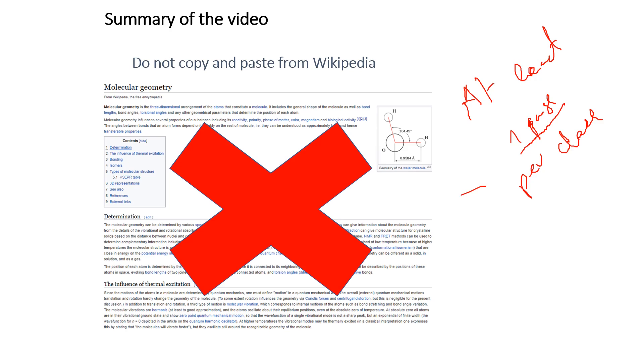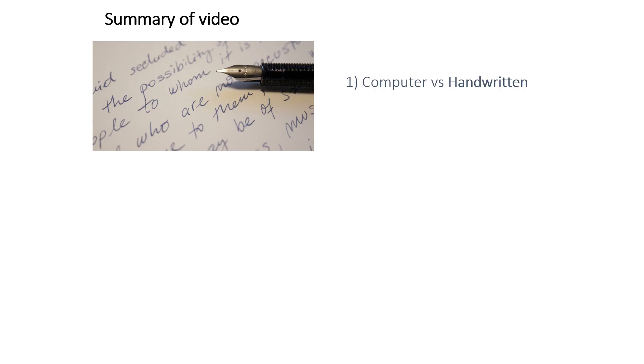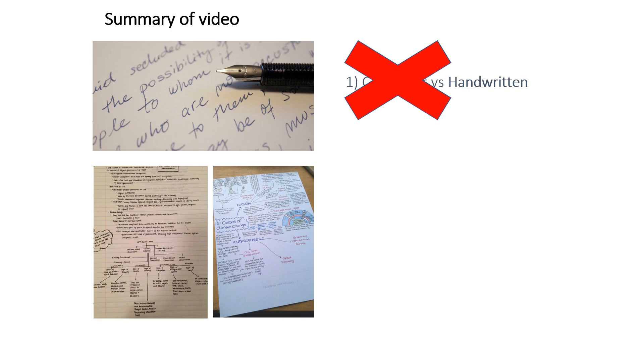And remember, please don't copy and paste from Wikipedia. You can write it on your computer or by hand. And there are different ways to do it. Some people like to write a lot, some people like to make schematics, some people like to have drawings.